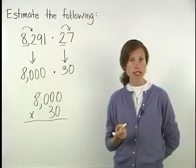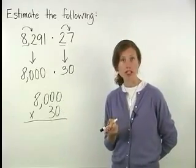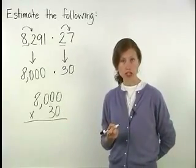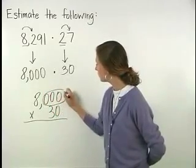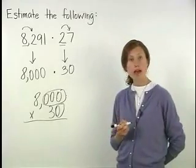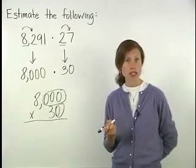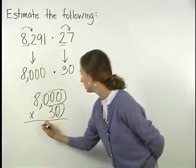An easy way to multiply numbers that end in zeros is to first count the number of zeros at the end of each number. 8,000 ends in three zeros and 30 ends in one zero. So we have a total of four zeros at the end of our numbers. So our answer will end in four zeros.